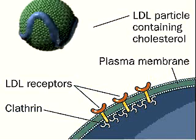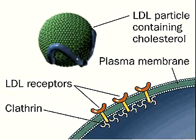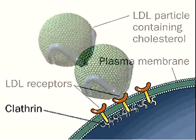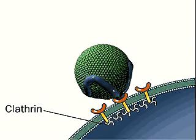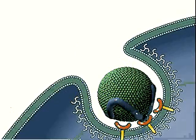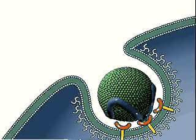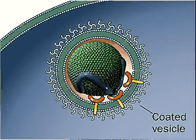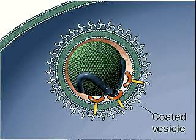Cells take up cholesterol in LDL particles by means of receptor-mediated endocytosis. The LDL particle binds to the receptors, which are linked to clathrin molecules. As endocytosis begins, a clathrin-coated pit forms and eventually engulfs the particle, forming a coated vesicle.